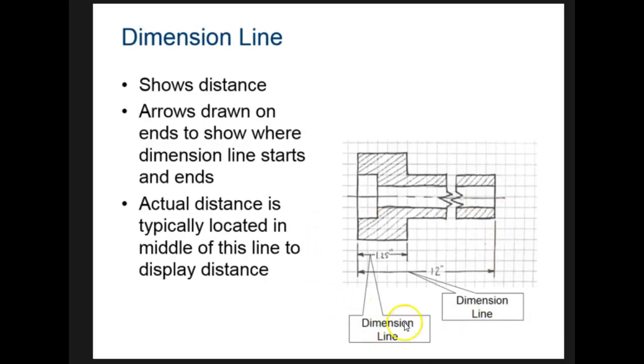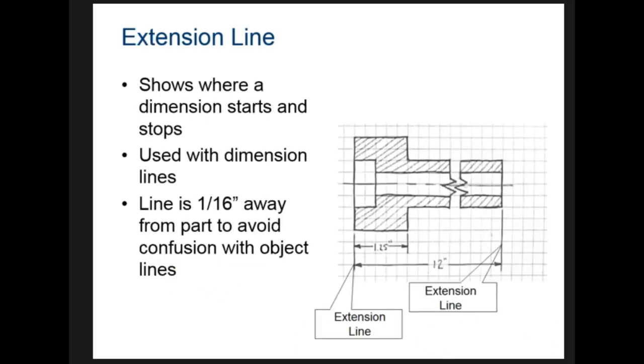Now when we start dimensioning later on, we're not going to dimension yet, we're going to start talking about them. Dimension lines are these lines right here where you put the dimension that tells how long something is. They have an arrow on each end and they're about medium weight. These lines that extend from the picture are called extension lines and they're used when we're dimensioning. Notice though that the extension lines never touch the figures, there's a little gap.